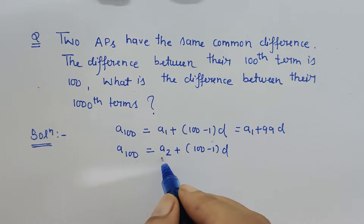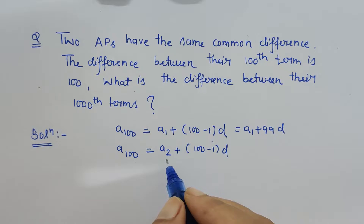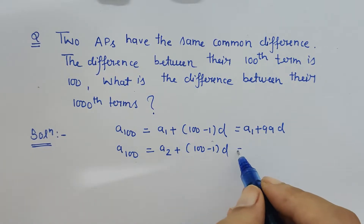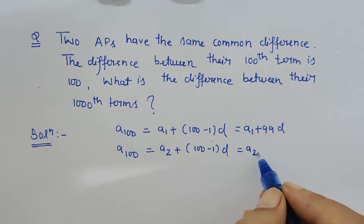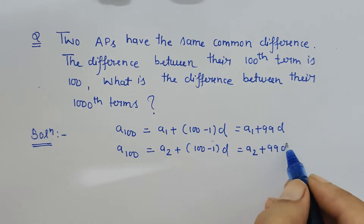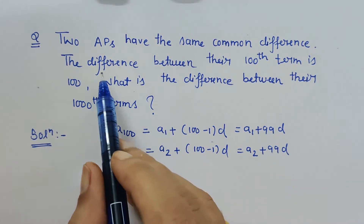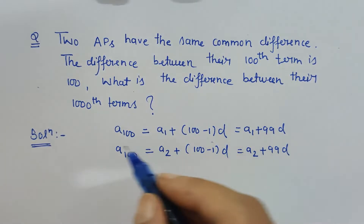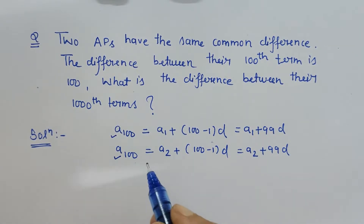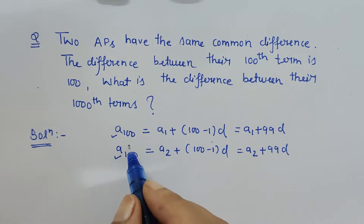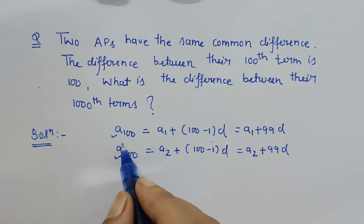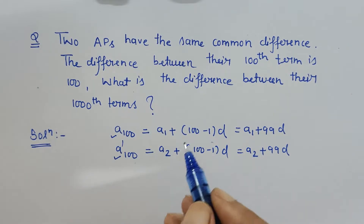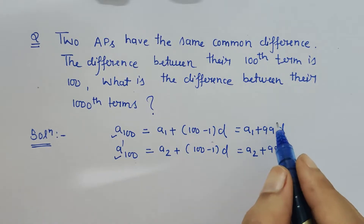For the second arithmetic progression, let a2 be its first term. The hundredth term is a2 plus (100 minus 1) into d, which equals a2 plus 99d. Now, the difference between their hundredth terms is given as 100.